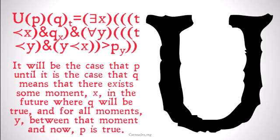Representing this logically: 'it will be the case that P until it is the case that Q' means there exists some moment X in the future where Q will be true, and for all moments Y between that moment and now, P is true. This makes sense as a future analog to since.